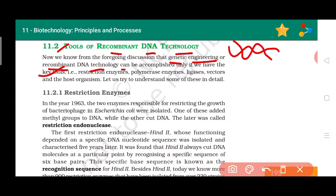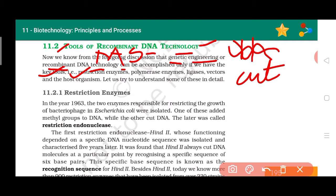This question is also asked in board exams for one mark: what are the tools of recombinant DNA technology? The first tool is restriction enzyme. The alternate name for restriction enzyme is molecular scissor. Scissors are used for cutting, so this enzyme works for cutting DNA — it cuts certain fragments or parts of DNA.